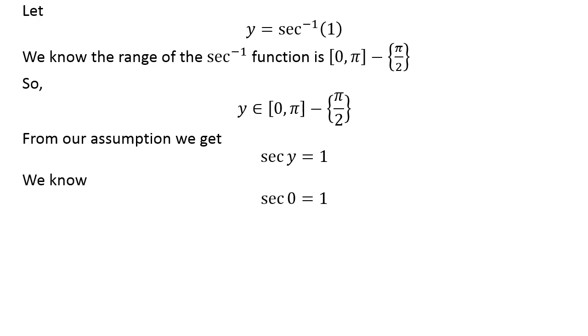We know secant of 0 is equal to 1. As 0 lies in the close interval of 0 and pi except of half of pi.